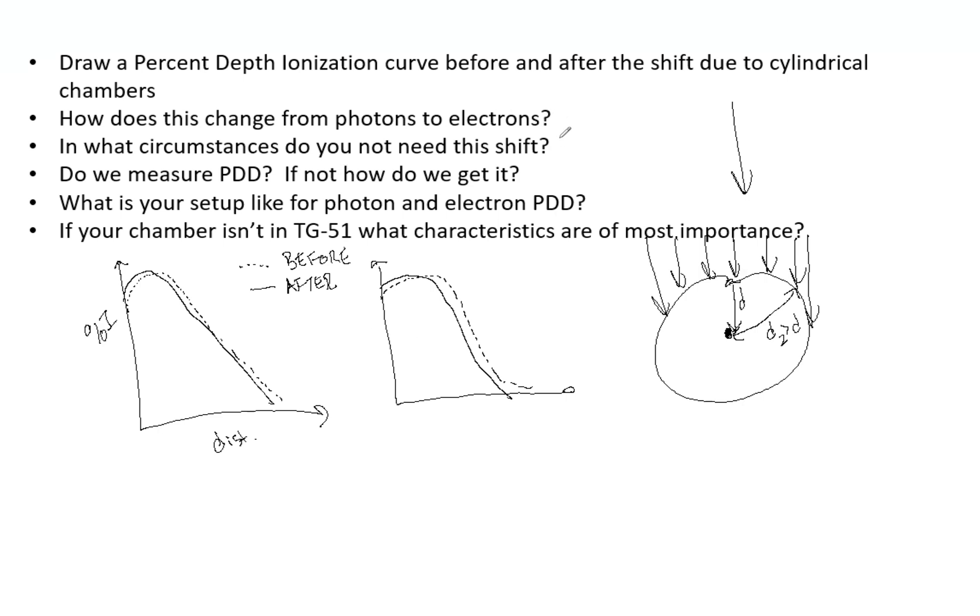So now, how does that change from photons to electrons? Photons, we are going to use 0.6 R-cav. That's the radius of the cavity of your chamber. And then for electrons, we have 0.5 R-cav.